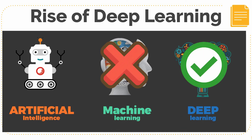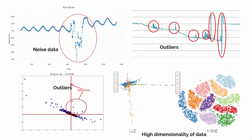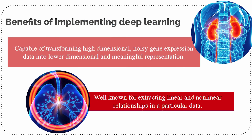Fortunately, deep learning technology can contribute towards resolving these challenges. As mentioned earlier, the Stacked Denoising Autoencoder is considered a handy algorithm in terms of gene regulatory target discovery, disease detection, and drug discovery. In order to organize and represent biological information, it is essential to make sure feature extraction is done efficiently. Our preferred deep learning model possesses certain benefits, as it is capable of transforming high dimensional noisy gene expression data into lower dimensional and meaningful representation. It is also well known for extracting linear and nonlinear relationships in particular detail.